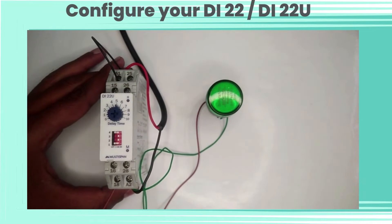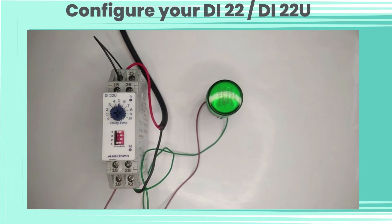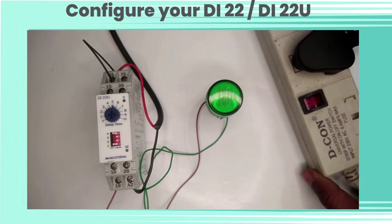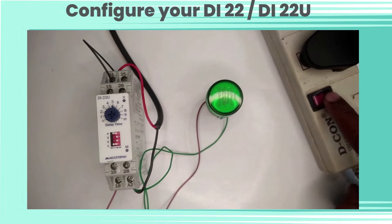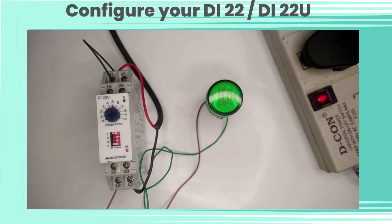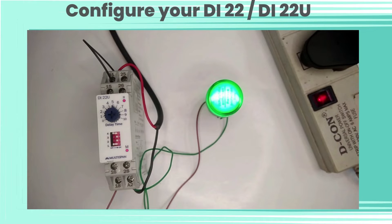Here, switch 4 condition is off, so it is in delayed on condition. So if we give power supply to our LED bulb, it will start after 5 seconds. Here we can see the LED bulb starts after 5 seconds. This is how you can set the parameters according to your application.